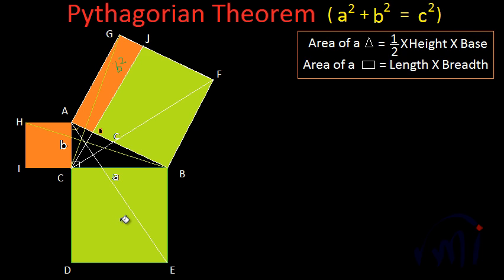So this is the proof of the Pythagorean theorem in a simple way. This is only one method — there are many other methods to prove the Pythagorean theorem. I will take a few more methods and explain them to you, so keep watching MathSmart. Bye bye till then.